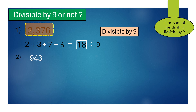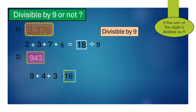For 943, first add the digits. We get 16. Since 16 is not divisible by 9, therefore the given number 943 is also not divisible by 9.